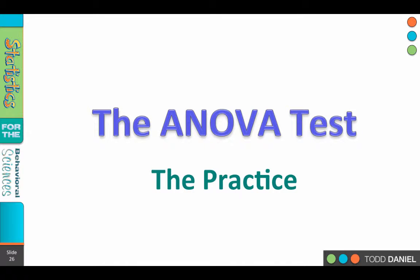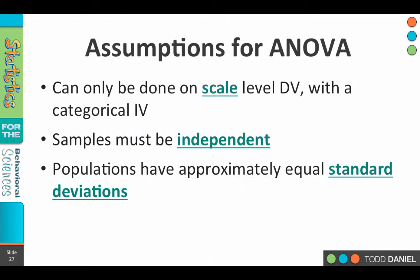Now that we better understand what we're doing with ANOVA testing, let's figure out how to do that in practice. We'll start with the assumptions for the ANOVA. These are things that are assumed to be true going into the test, so it's important that we check these assumptions and make sure that our data do meet them, and if they don't, we need to know what to do about that.